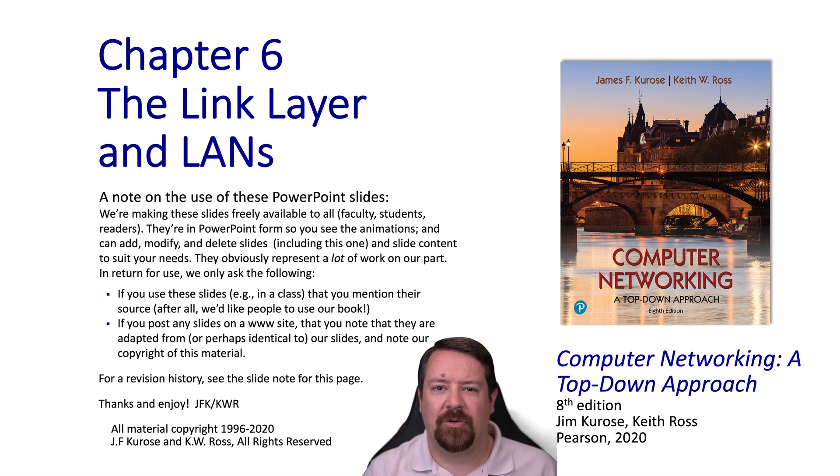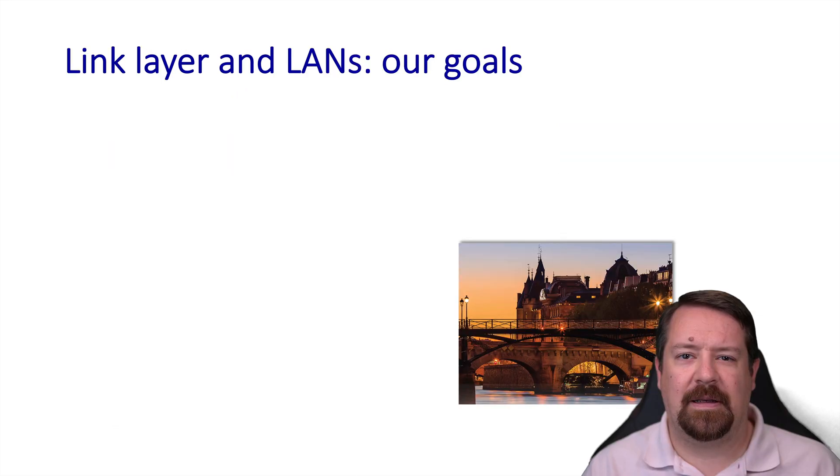We've now reached the sixth chapter in Kurose & Ross Computer Networking, A Top-Down Approach. As before, we're using the slides supplied by the authors to accompany the book. Now that we've reached the link layer, or layer 2 of the network stack, we're looking at details on a much smaller scale than we've been examining so far.